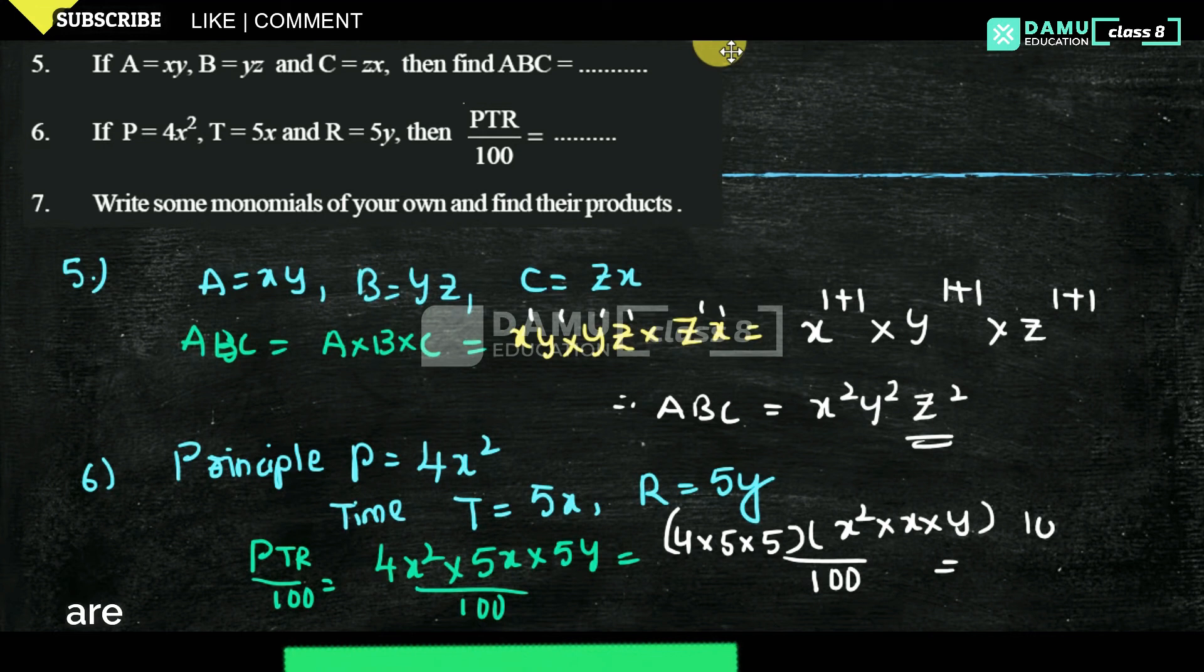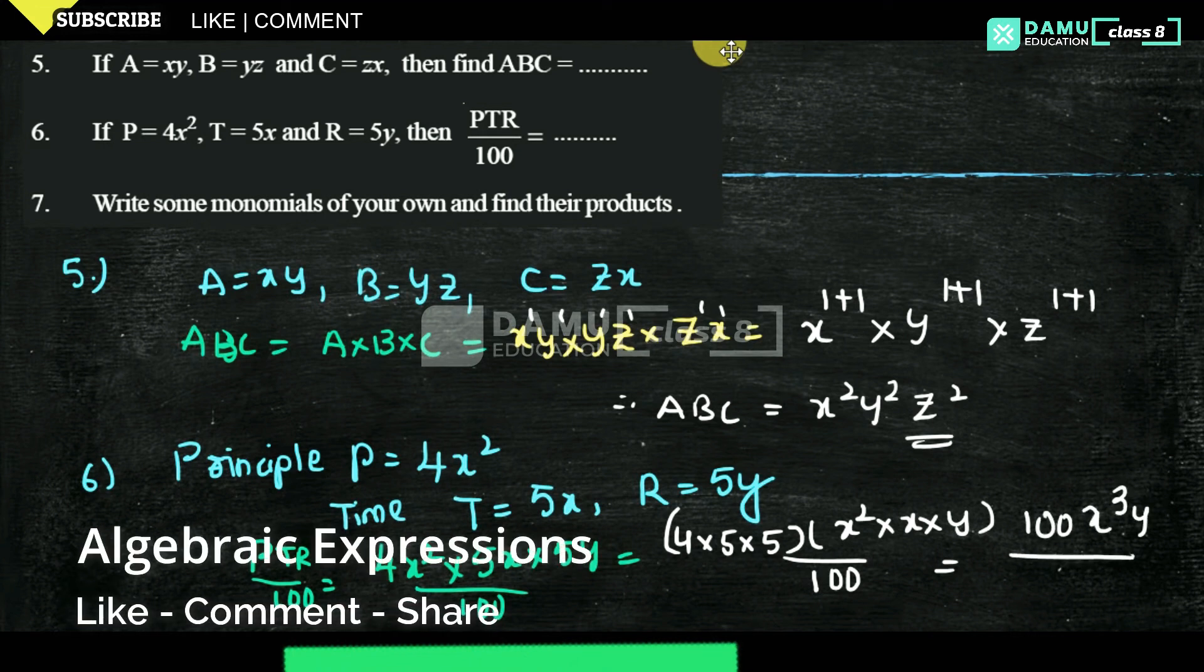100 into x cubed y, whole divided by 100. Then 100 and 100 will cancel. Then x cubed y is the answer.